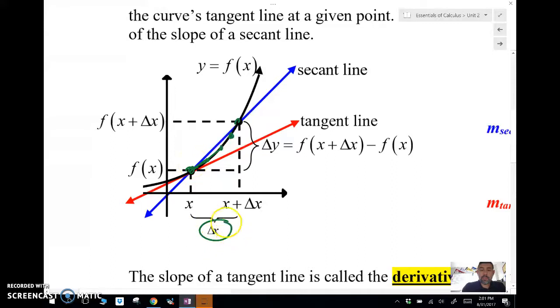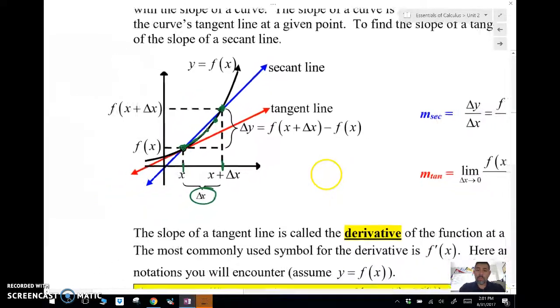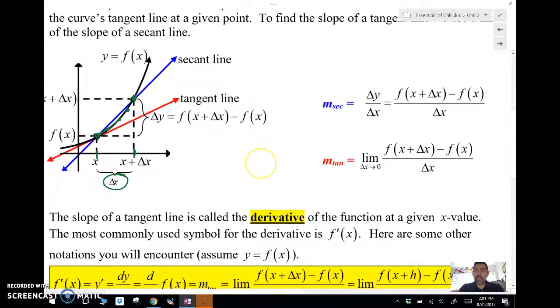And so notice that this distance between my X values of my points is getting closer and closer and closer to zero, right? That difference is getting closer to zero. And whenever we're making something get closer and closer and closer to something, that's called a limit, right? So what we're doing is we're taking the slope of this secant line.